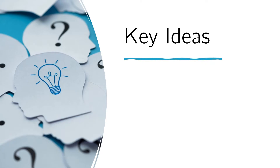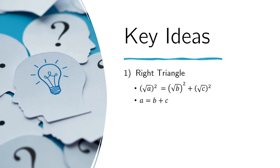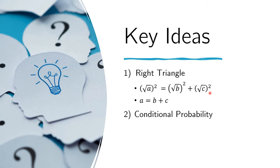There are two key ideas we need to recall to solve this problem. The first is that for a right triangle, the square of the hypotenuse equals the sum of the squares of the two other sides. So if the hypotenuse has length √A, then A must equal B plus C. And if A equals B plus C, it is a right triangle. This follows directly from the Pythagorean theorem — a triangle is a right triangle if and only if this relationship among the sides holds.